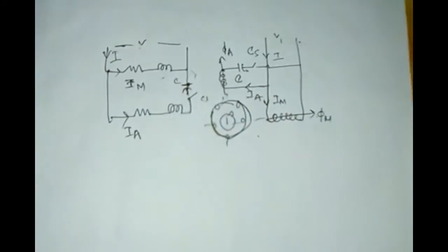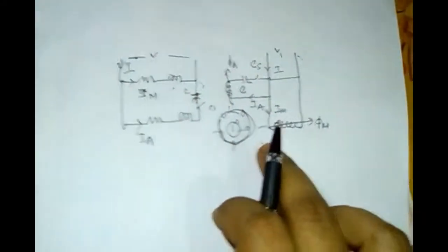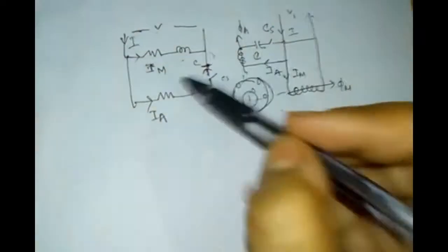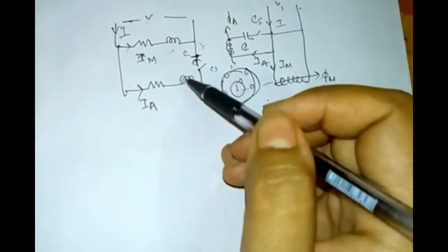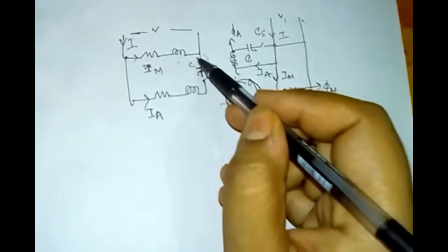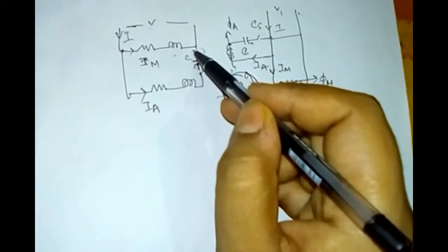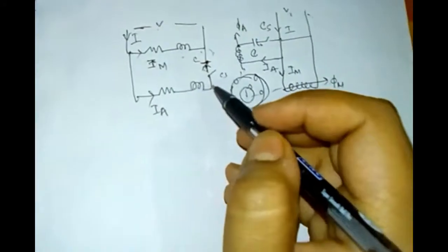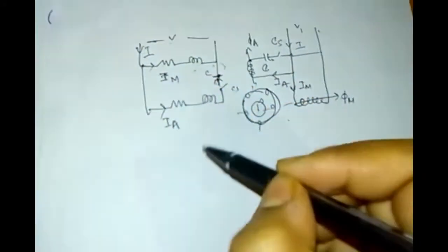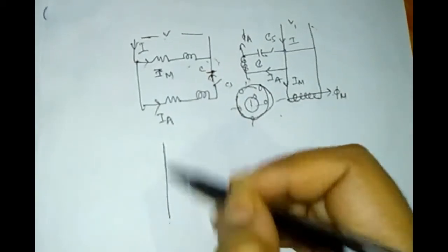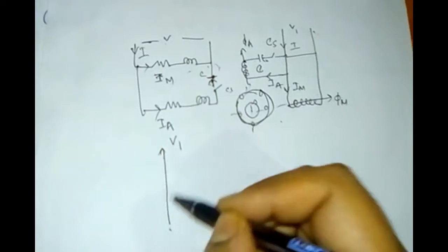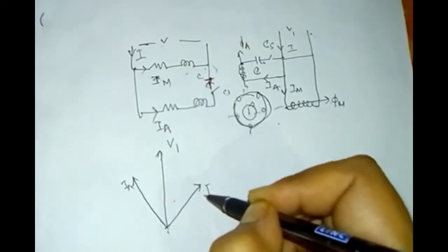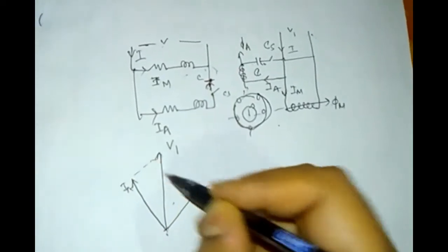Now see the phasor diagram. The capacitor will improve the phase angle because in a capacitive circuit the current leads. The auxiliary winding is connected with a capacitor and centrifugal switch, so the auxiliary winding current will lead. This is the voltage reference. The auxiliary winding is leading here.